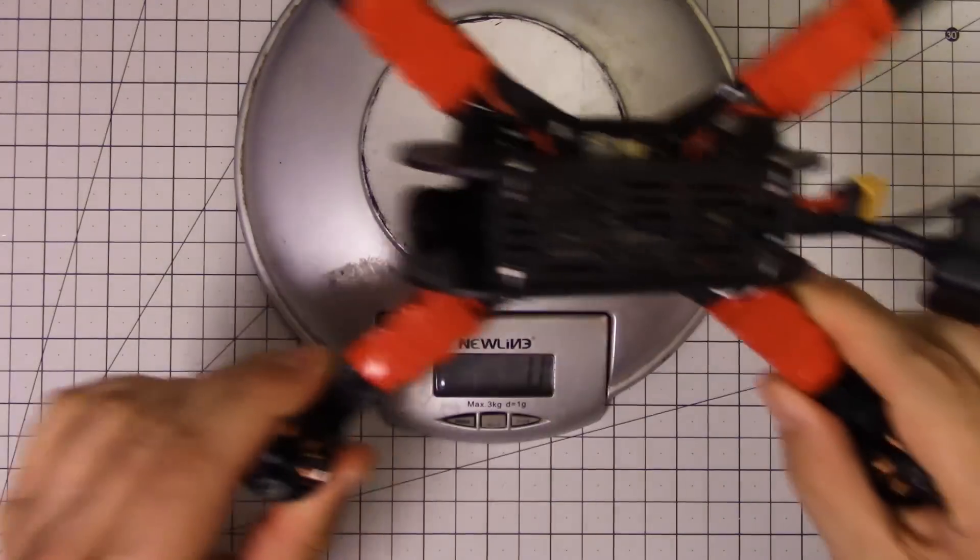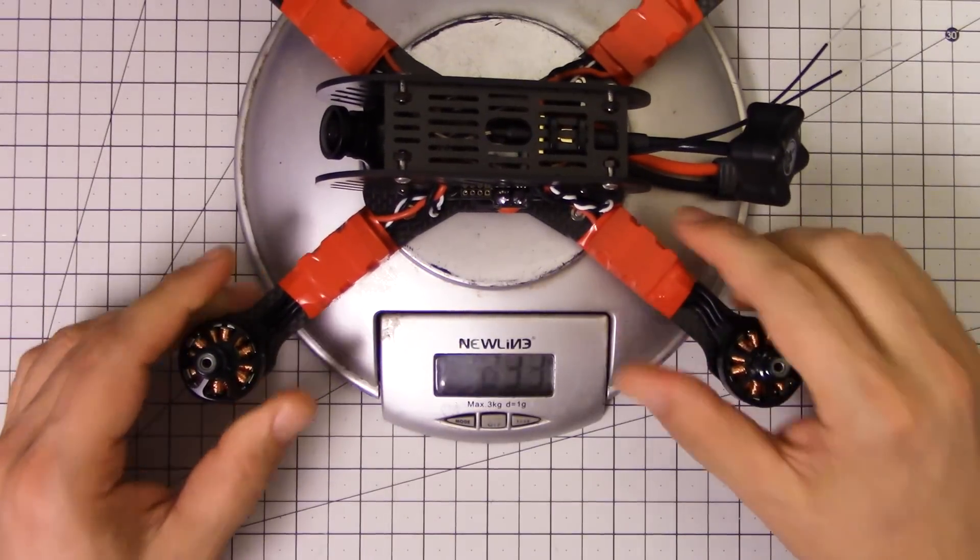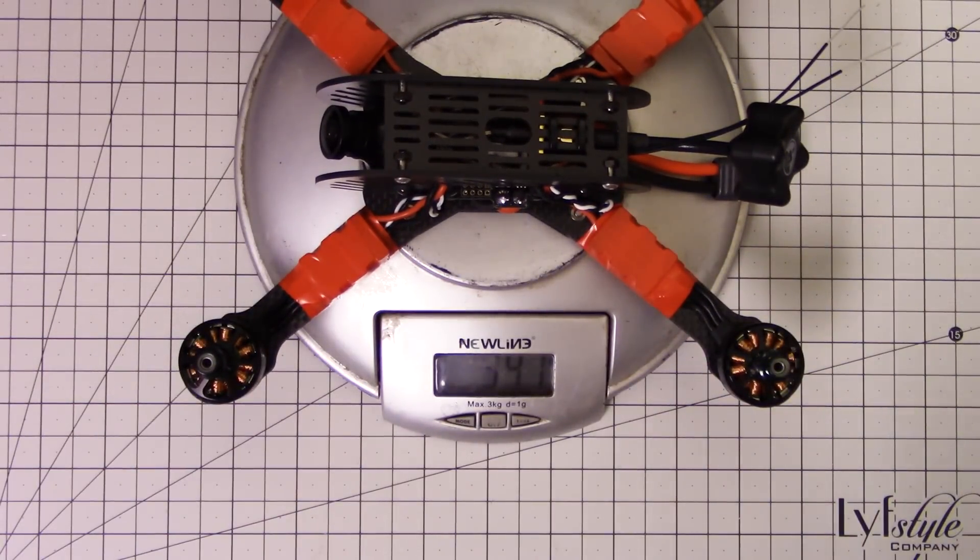Since I know you're asking, let's weigh it. This is all up but no battery, 341 grams. So you're gonna come in around 440 or just about 500 grams with a typical racing battery weighing about 160 grams. And I think 500 grams with the battery, that's pretty respectable.